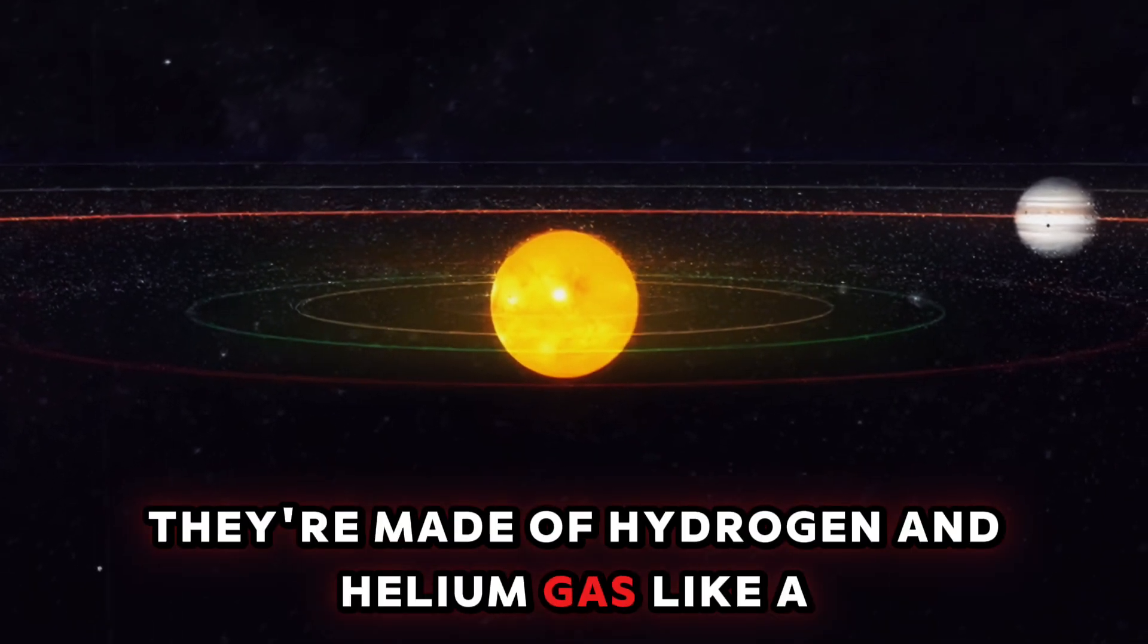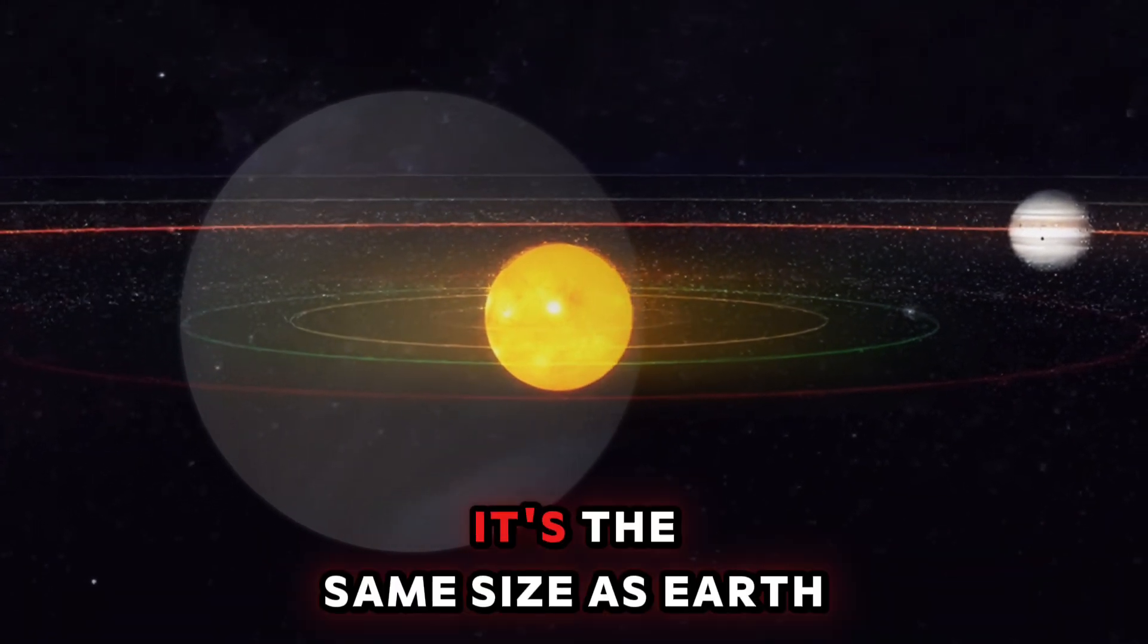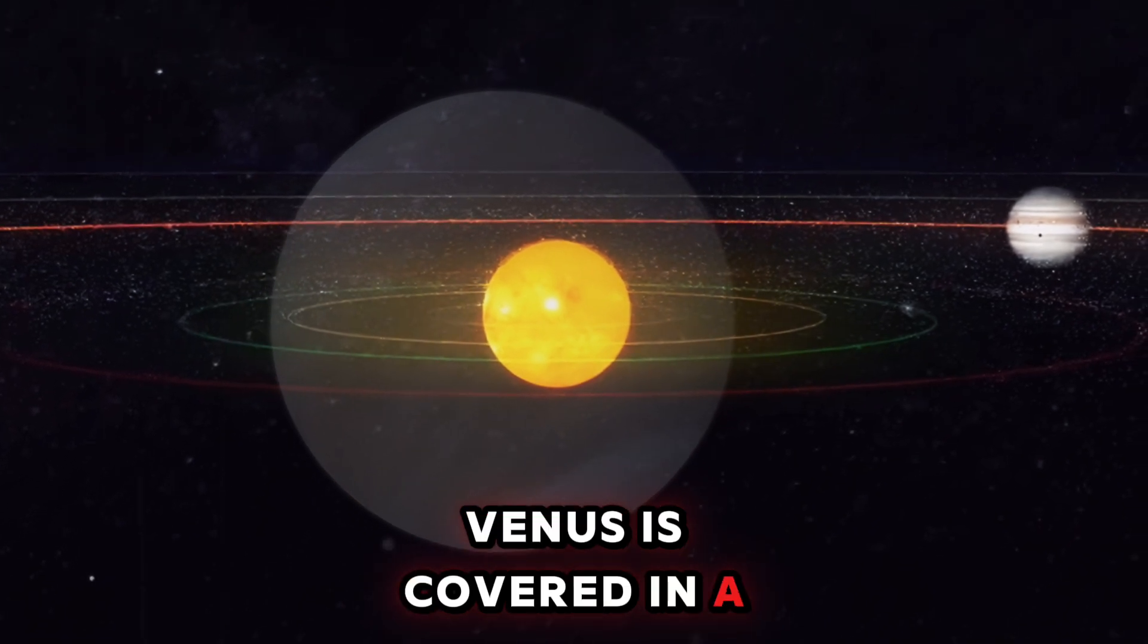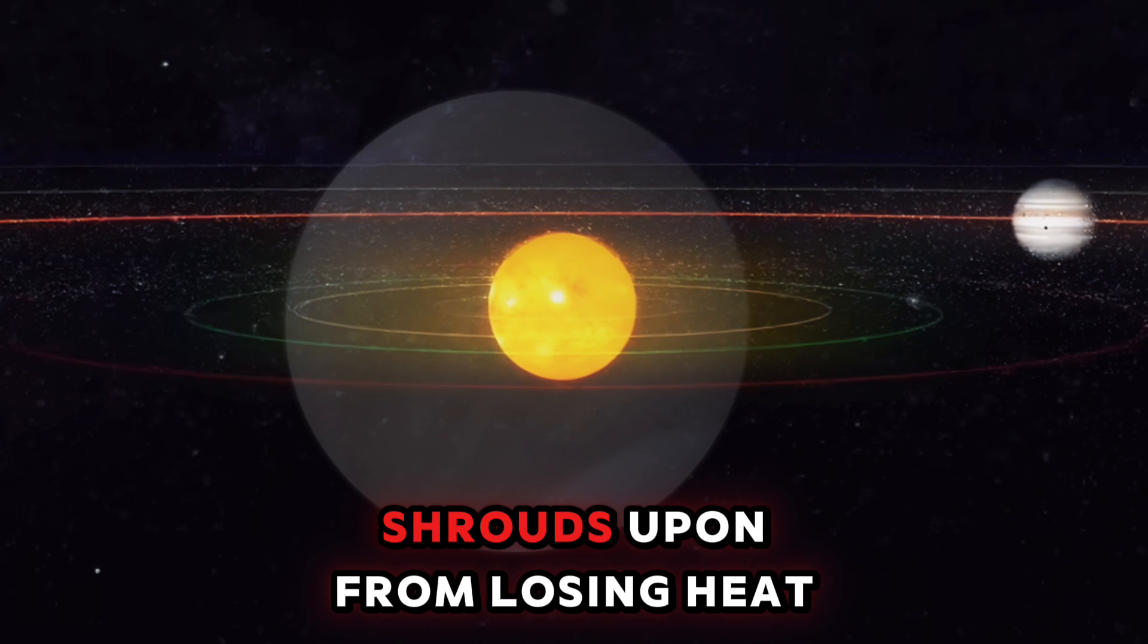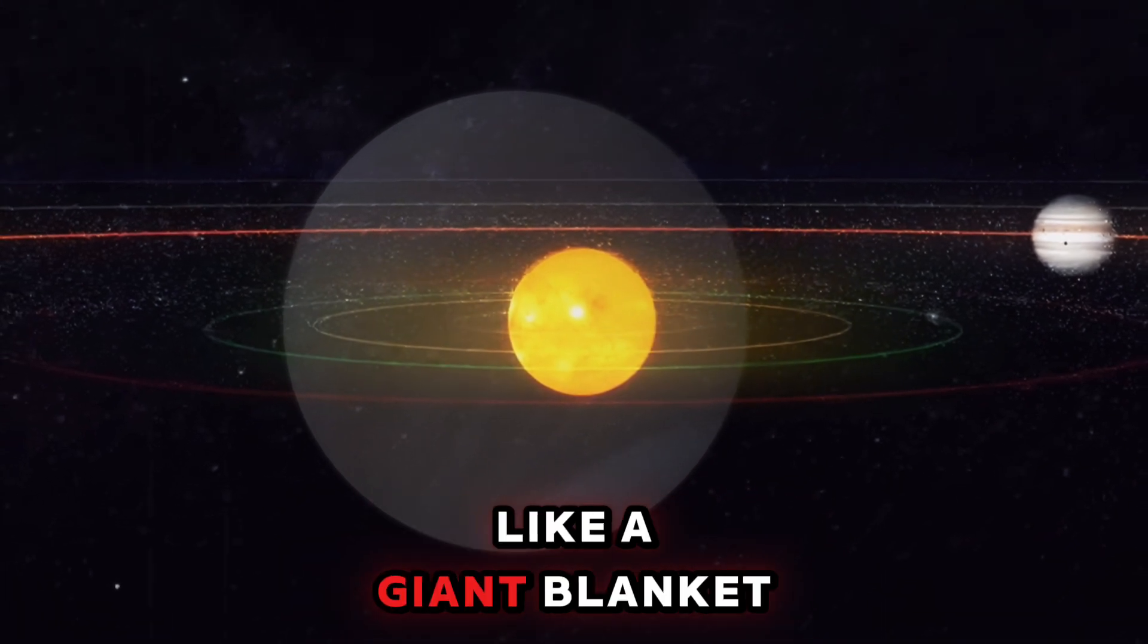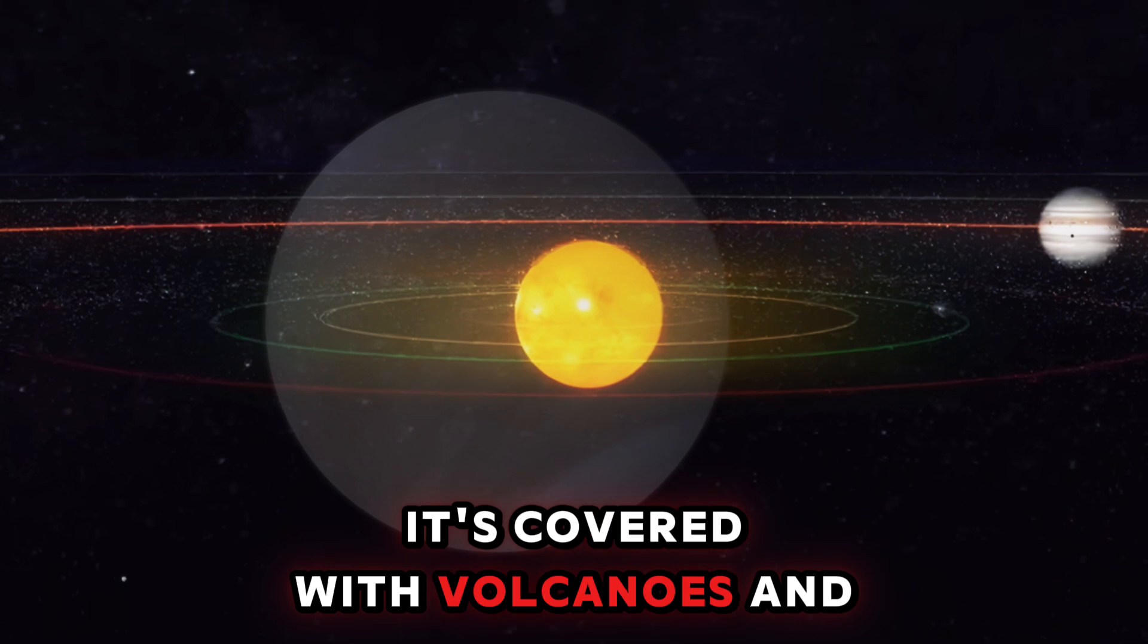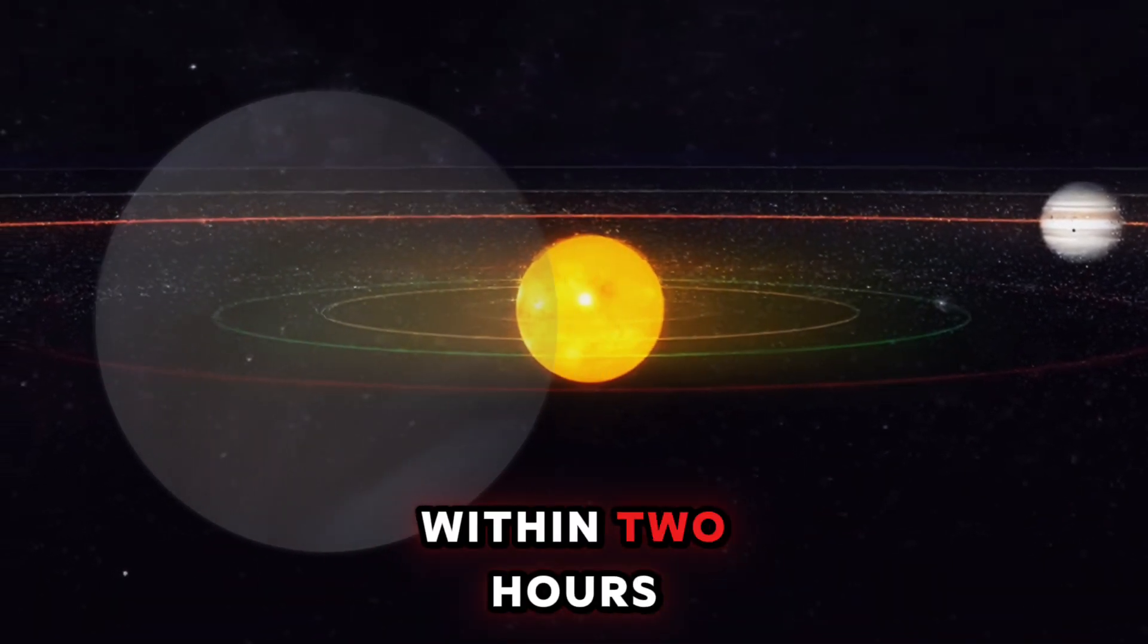Venus is the second planet from the sun. It's the same size as Earth, give or take some. Venus is covered in a thick layer of clouds made of carbon dioxide which shrouds the planet from losing heat like a giant blanket. So it's 900 degrees due to the greenhouse effect. It's covered with volcanoes and shaped by their powers, and the only probes that ever landed died within two hours.